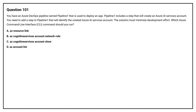Question number 101. You have an Azure DevOps pipeline named Pipeline 1 that is used to deploy an app. Pipeline 1 includes a step that will create an Azure AI Services account. You need to add a step to Pipeline 1 that will identify the created Azure AI Services account. The solution must minimize development effort. Which Azure command line interface command should you run?